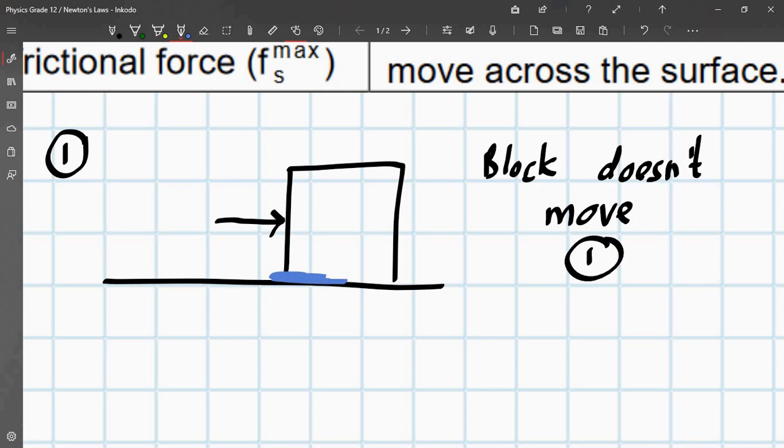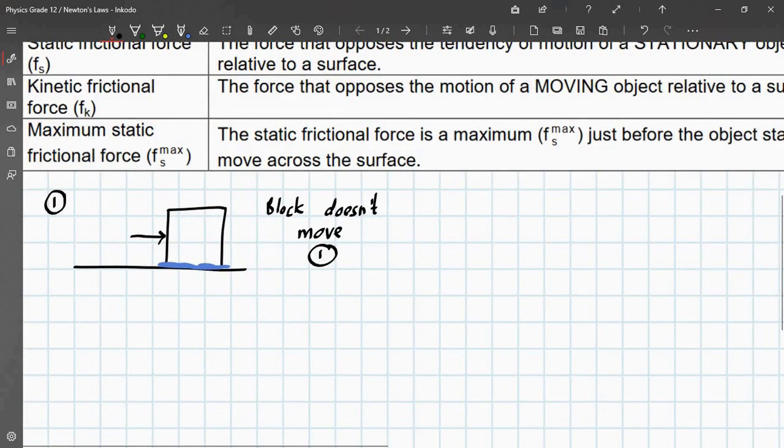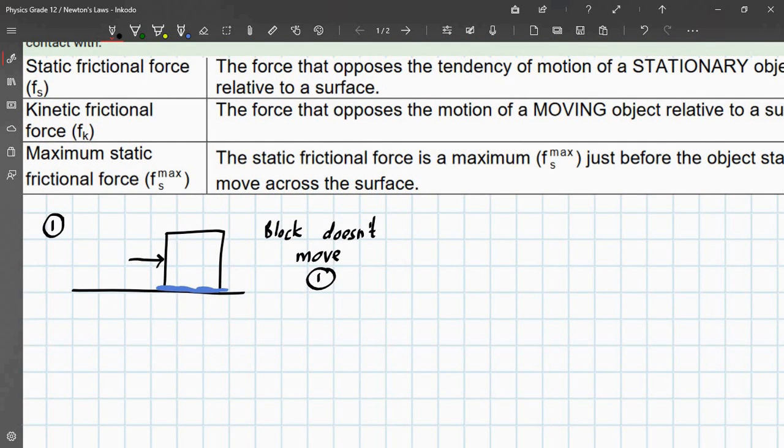then it is static frictional force. So, that means that the amount of friction over here, at this point here, is too great, and the block cannot move. That means it's static frictional force. Very simple to understand. Move on.